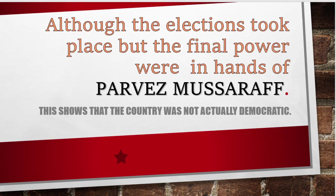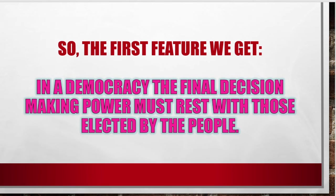This shows the country was not actually democratic. Elections would happen, votes were given, and people participated at maximum levels, but after the election Musharraf remained president. This makes the country undemocratic — election alone does not mean the country is democratic; democracy should be followed properly. The first feature we get from this is: in a democracy, the final decision-making power must rest with those elected by the people. This is the form of government in which the people can make the laws.